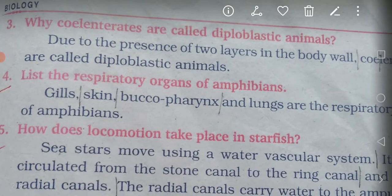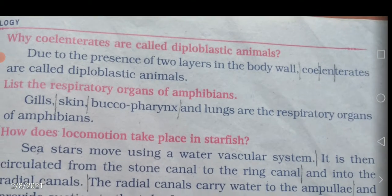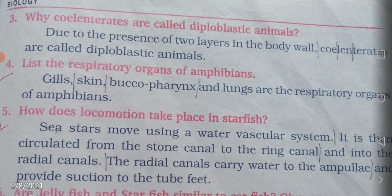Why are cnidaria called diploblastic animals? Due to the presence of two layers in the body wall, cnidaria are called diploblastic animals. The two layers are ectoderm and endoderm. Since cnidaria have these two layers, they are called diploblastic animals.